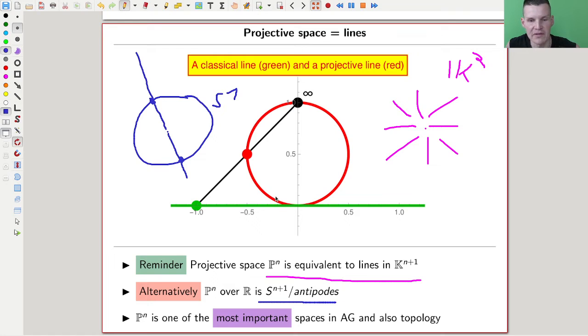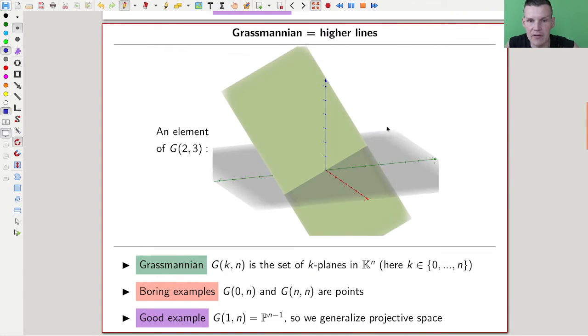Projective space is one of the most important spaces in algebraic geometry and topology, with this identification of essentially spheres where you identify opposite points. You want to generalize this picture. If you think of projective space as being lines, there's an immediate generalization: why not consider planes in the space, or higher volumes? That's exactly where the Grassmannians come into the game.